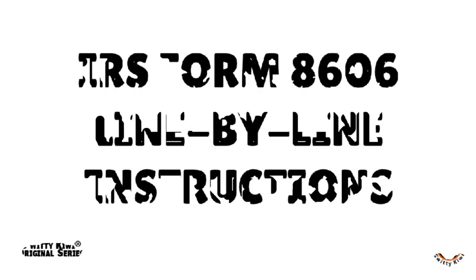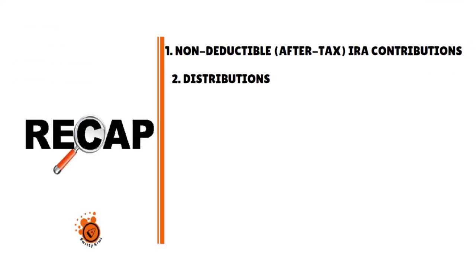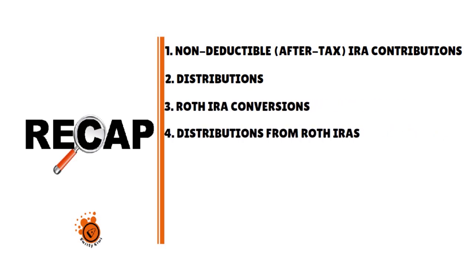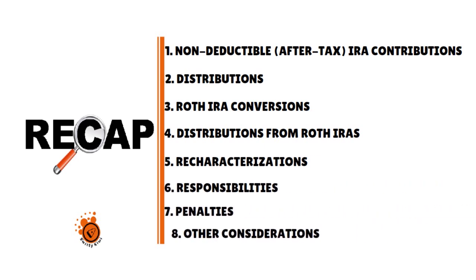This was a short conversation and I wanted to touch on Form 8606 line-by-line instructions. I spoke about non-deductible after-tax IRA contributions, distributions, Roth IRA conversions, distributions from Roth IRAs, recharacterizations, responsibilities, penalties, and other considerations. Then I gave you the specific line-by-line instructions on how to fill out and file Form 8606. Thank you so much for your attention — I will see you next time.